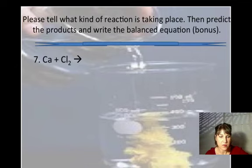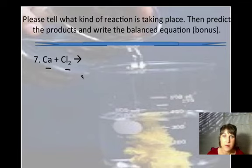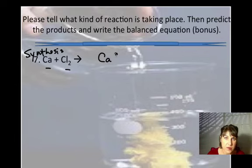All right, we've got one more set. Let's look at what happens when we put two elements together. See, if we put calcium together with chlorine, what are we going to get? A synthesis reaction. So we're going to form just one product.